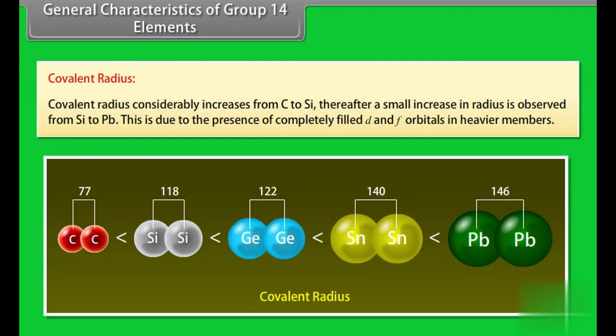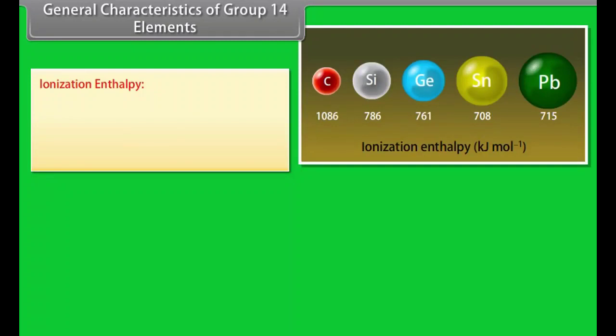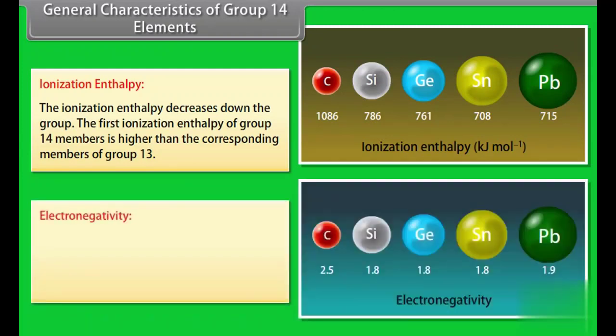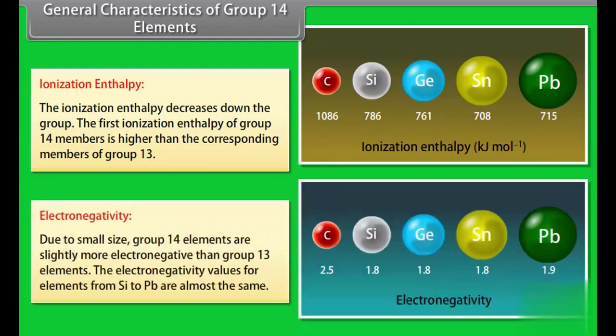Ionization enthalpy. The ionization enthalpy decreases down the group. The first ionization enthalpy of group 14 members is higher than the corresponding members of group 13. Electronegativity: due to small size, group 14 elements are slightly more electronegative than group 13 elements. The electronegativity values for elements silicon to lead are almost the same.